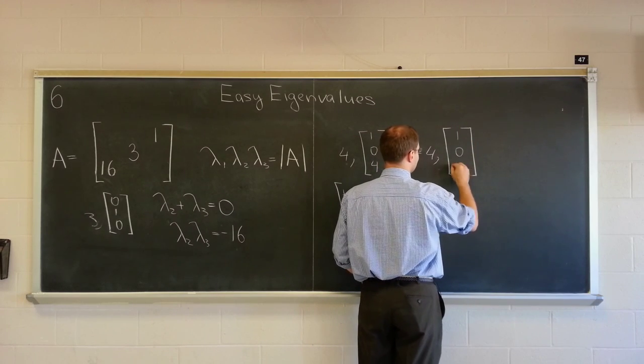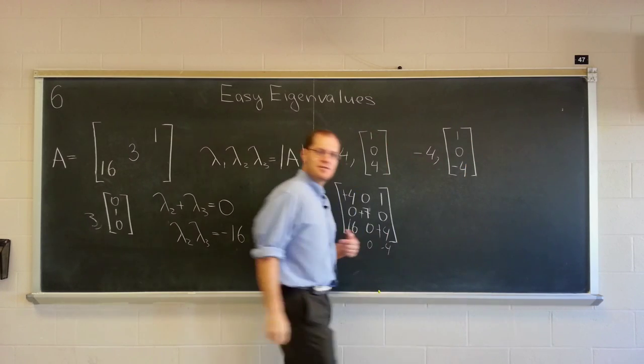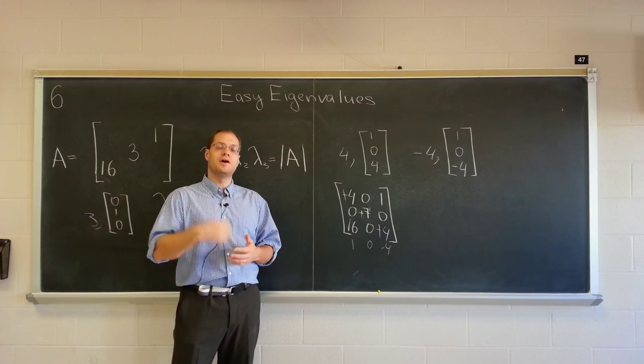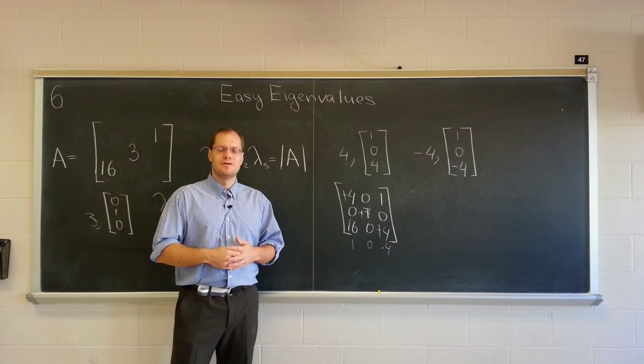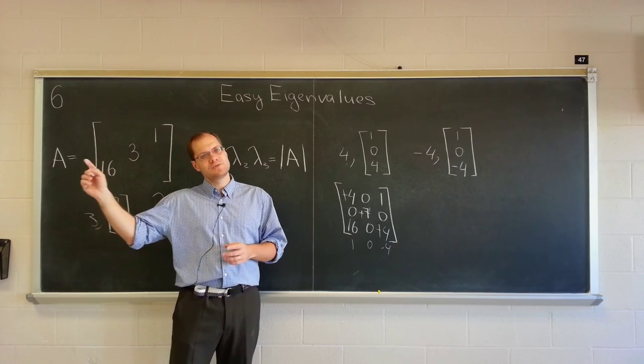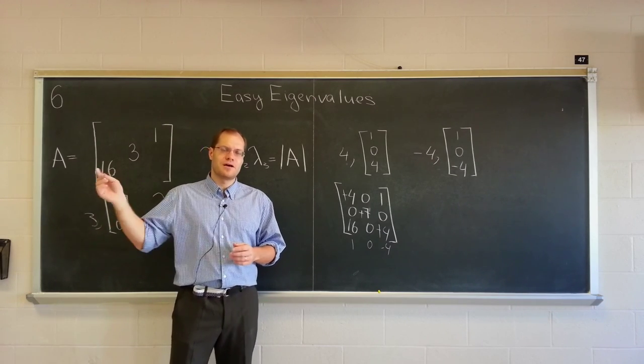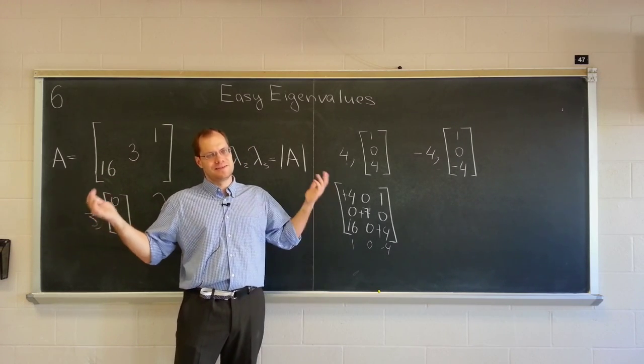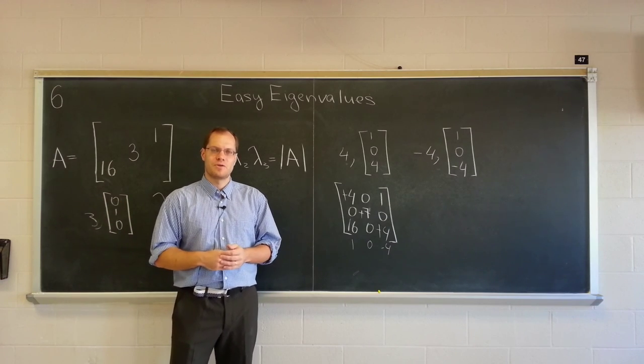So this was a demonstration of the product property, and how it also helps you to determine the one remaining eigenvalue when you know all but one. Unless one of those was zero. If one of those was zero, then the determinant is zero, and this method doesn't work anymore.